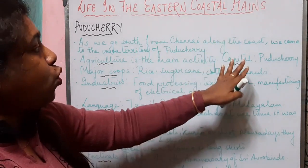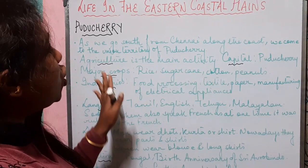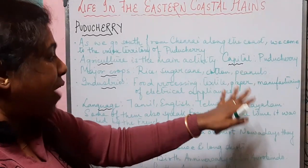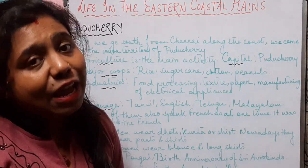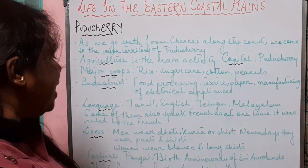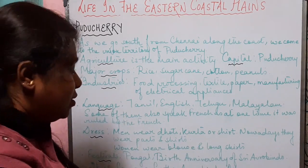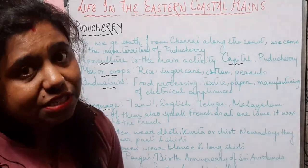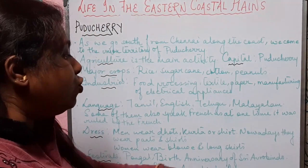To recapitulate: Puducherry is located south of Chennai along the coast. The capital is Puducherry. Agriculture is the main activity; major crops are rice, sugarcane, cotton, and peanuts. Important industries are food processing, textiles, paper, and manufacturing of electrical appliances. Tamil, English, Telugu, and Malayalam are the common languages; some people also speak French due to former French rule. Men wear dhoti, kurta, or shirts; women wear blouse and long skirts. Pongal and the birth anniversary of Sri Aurobindo are the most important festivals. The Aurobindo Ashram is the most famous tourist attraction.